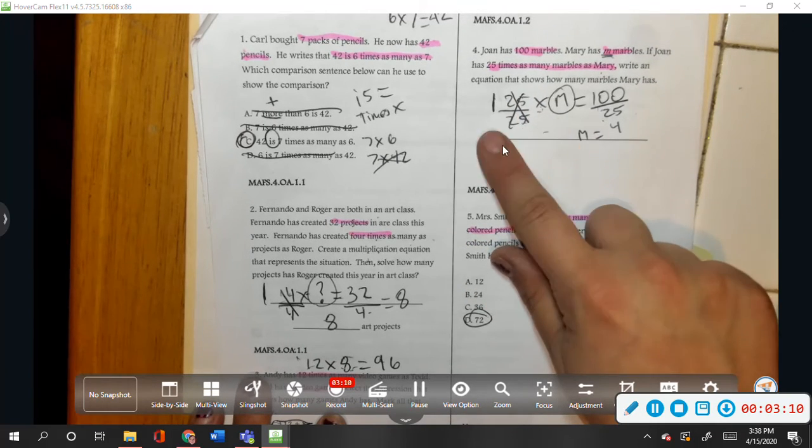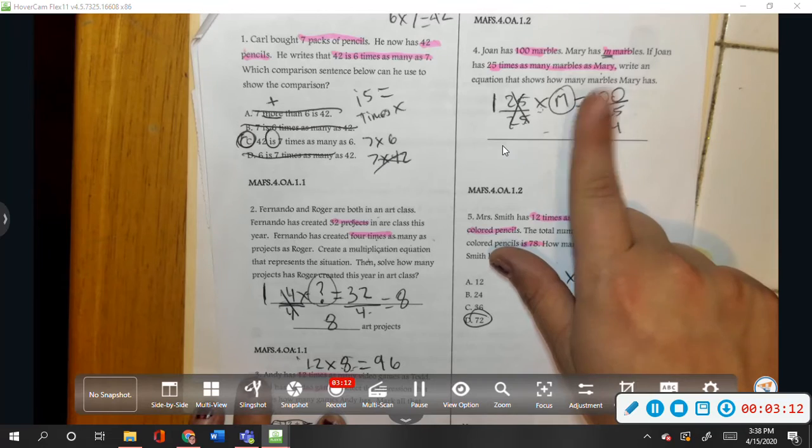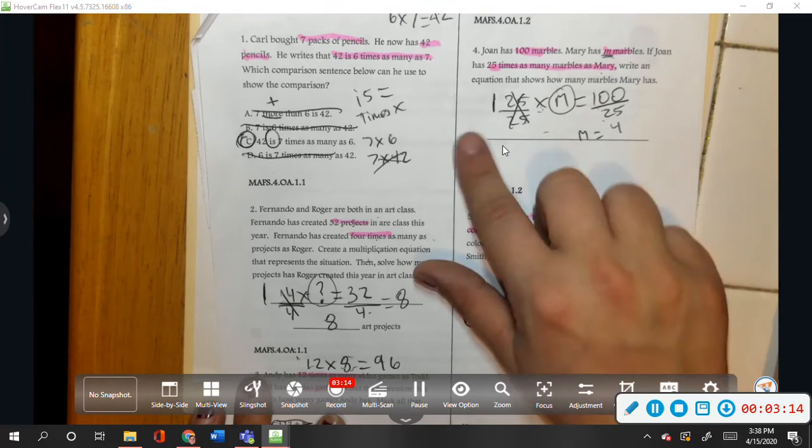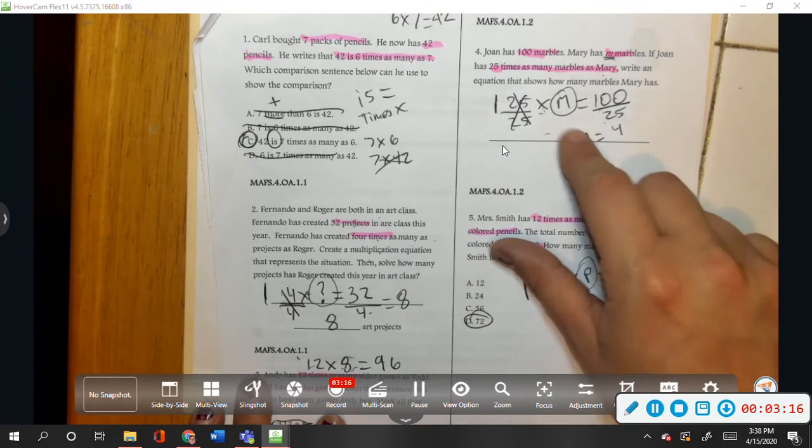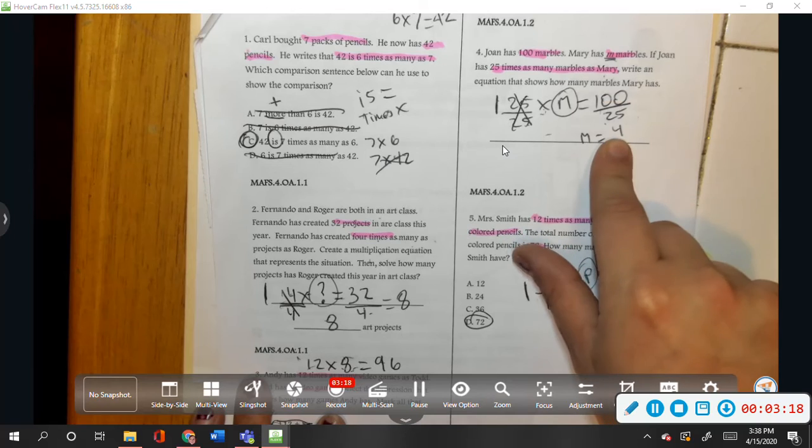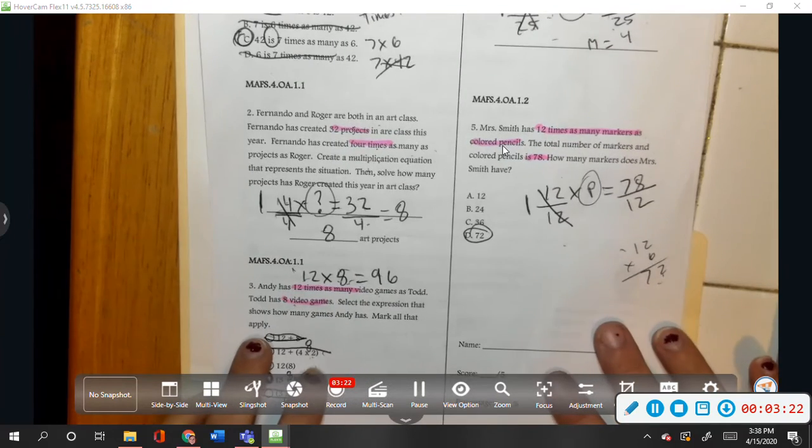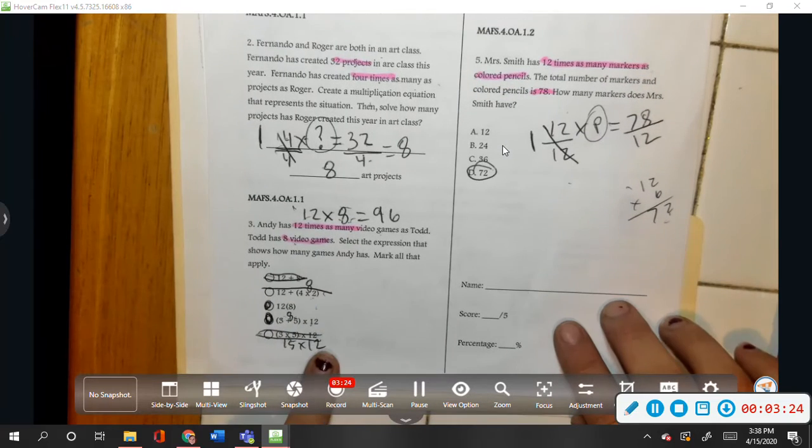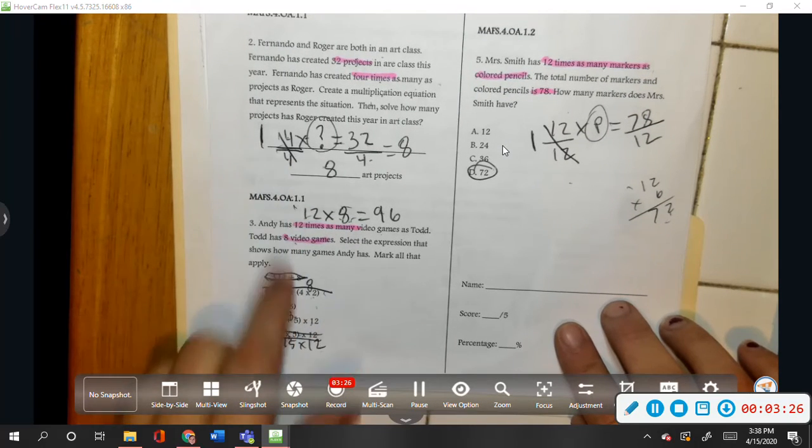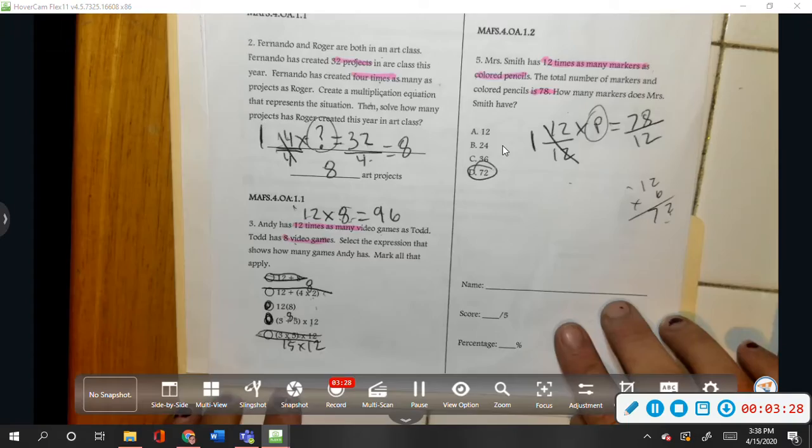We all know that one times any number is that number. So we just ignore it. We just bring that M down. We divide on the other half of our equation. And that's how we get that. We did the same thing over here.